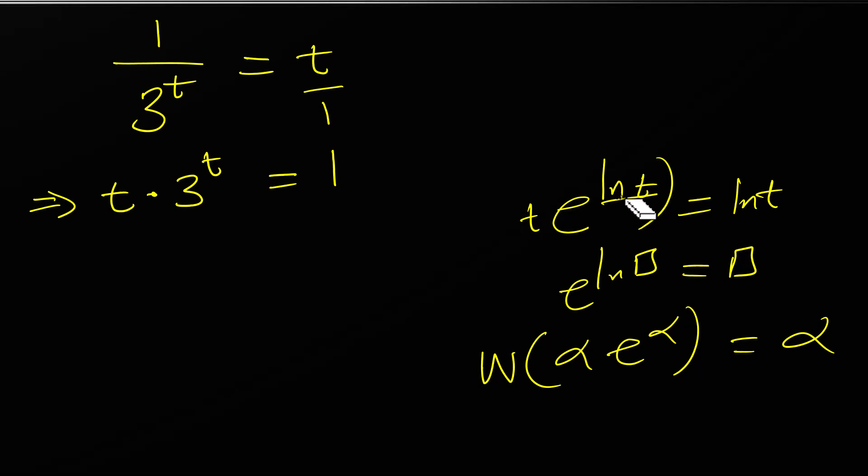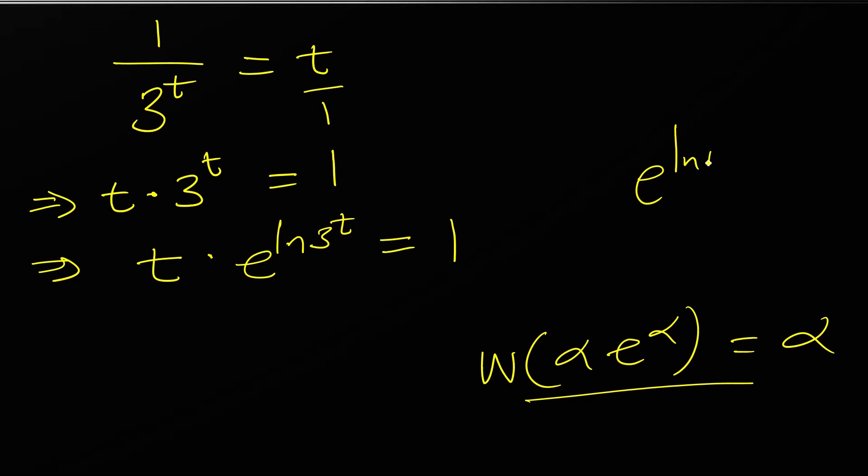We are working towards this on the left hand side. What we are going to do is represent 3 to the power t. I'll say t times, instead of writing this I'll write it as e raised to ln of 3 to the power t equals 1. When we have e raised to M to the power C, it's the same as e raised to C ln of M. This is called the power rule.